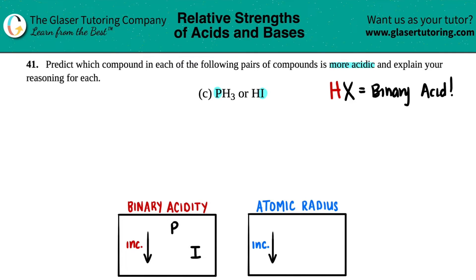Also, take note that HI is one of your six strong acids. PH3 didn't make the list. So it's because of this trend that iodine would be more acidic than phosphorus. So HI is more acidic.